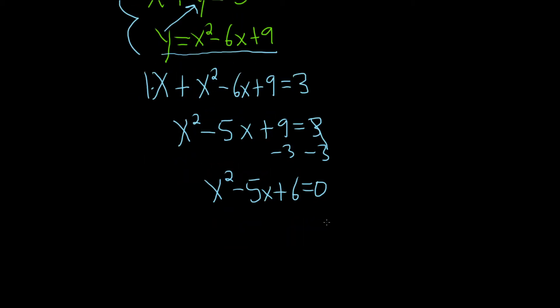So this should factor. Let's go ahead and try. It's going to probably look like this. Parentheses x, parentheses x, equal to 0. So we need two numbers that multiply to 6 and add to negative 5. I think 2 and 3 should do it.